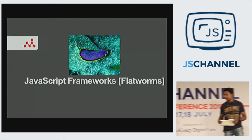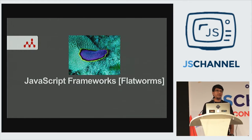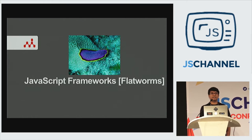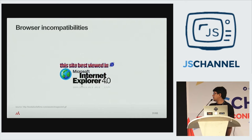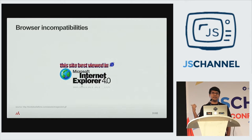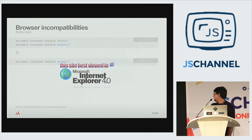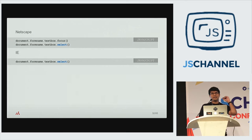Around this time, people started taking JavaScript seriously. They were writing more and more JavaScript and felt the pain of not having good abstractions. One of the major issues was browser incompatibility. You'd see badges on websites saying 'best viewed in IE' or 'best viewed in Netscape,' and those badges remained until the early Firefox era. All browsers had their own way of doing things; these incompatibilities haven't gone away, but they were much worse back then.